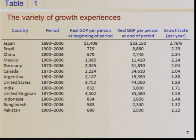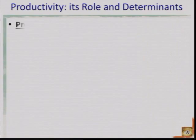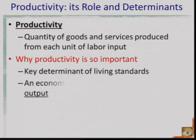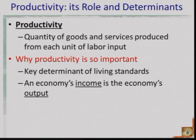You can see the United States about in the middle. What causes these differences in growth experiences? Why do some countries grow faster or slower, and why are there different standards of living across countries? We've talked about this in Chapter 1. The one-word answer is productivity, which is defined as output per unit of input — how many goods and services you can make from each unit of input, for example, labor.